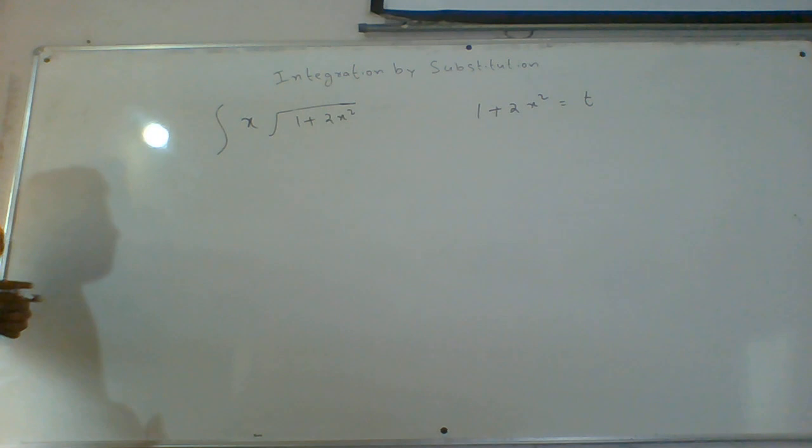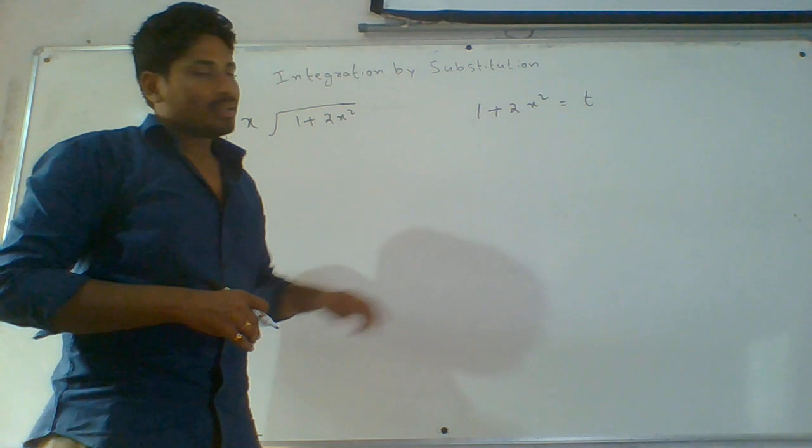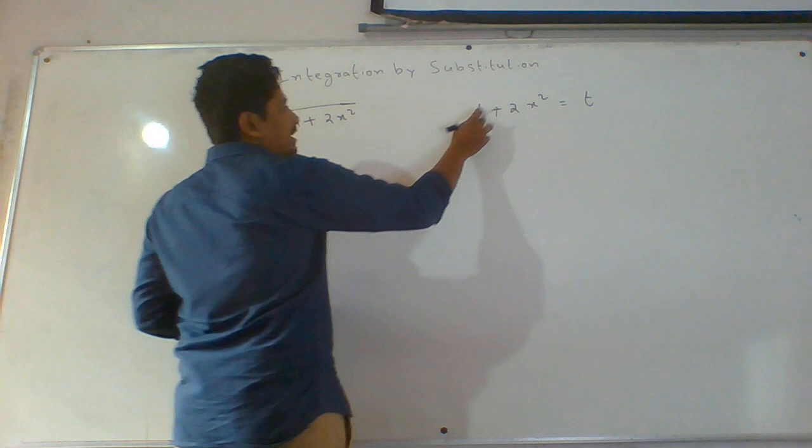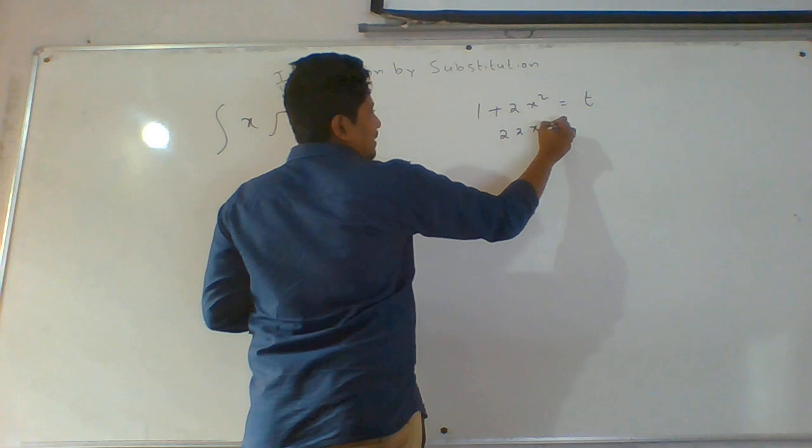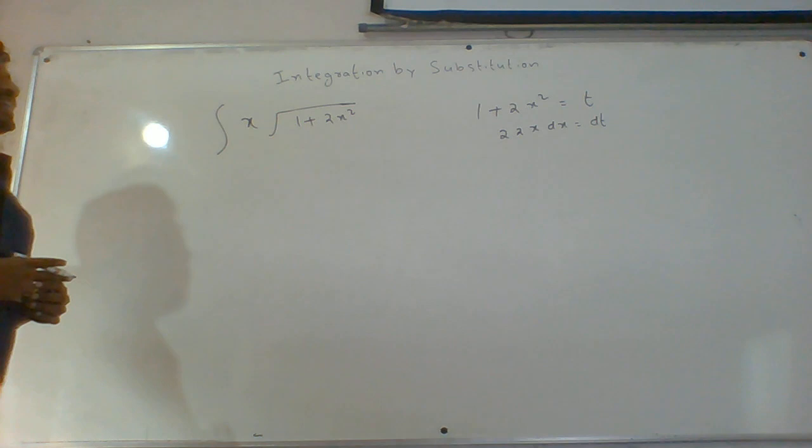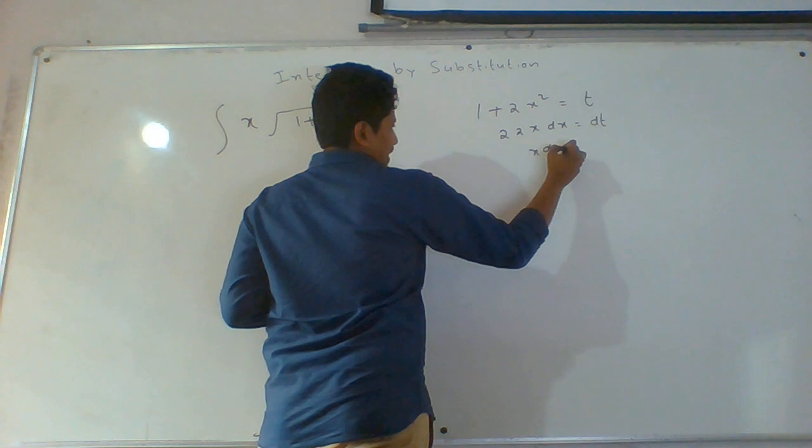Apply derivative on both sides with respect to variables. The derivative of 1 is 0. The derivative of 2x square is 2 into 2x dx equals to dt. So 4x dx equals to dt, which means x dx equals to dt by 4. This side will be divided by 4.